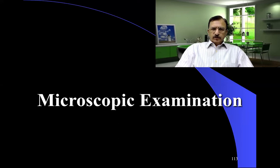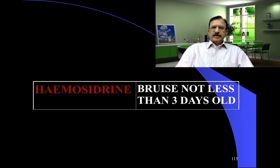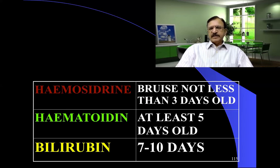With microscopic examination, these changes also depend upon the detection of pigments. Hemosiderin, when the bruise is not less than three days old, is brownish or dark brown in color. Then the greenish color pigment because of hematoidin indicates the bruise is less than five days old. And bilirubin, which is a yellow colored pigment, appears at seven to ten days.